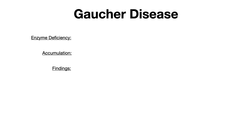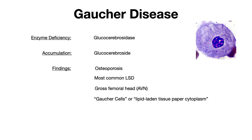Next is Gaucher disease. The enzyme deficiency is glucocerebrosidase, which causes the accumulation of glucocerebroside. The findings include osteoporosis, and you need to know this is the most common lysosomal storage disease. You get avascular necrosis of the femoral head — what I'll call a 'gross femoral head' — and the presence of Gaucher cells, also described as lipid-laden tissue-paper cytoplasm cells. An image of the Gaucher cell is shown, displaying those characteristic lipid deposits throughout.